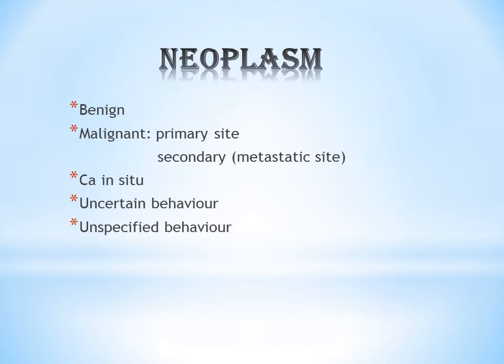Based on the property of metastasis, neoplasm is divided into benign and malignant. In benign, it does not show the metastatic property — it will not spread from one place to another; it will be confined to its origin. Whereas malignant neoplasm will spread from its origin to another location. The malignant neoplasm will have two sites: the primary site, which is where the neoplasm originates, and the secondary site — otherwise called the metastatic site — which is the site to where the neoplasm spreads.